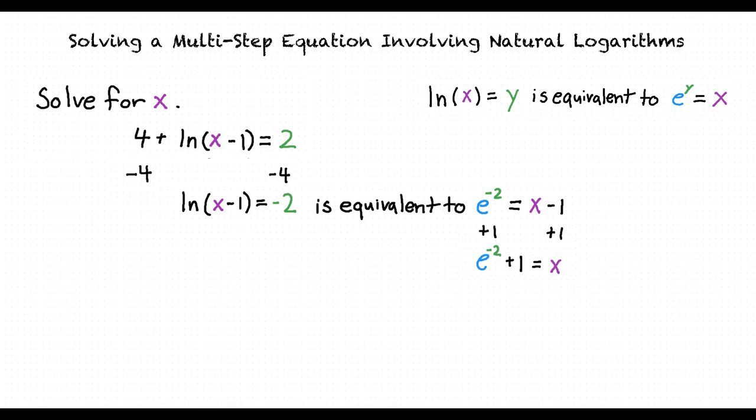Once we isolate x, we find that x is equal to e to the negative 2 plus 1. Using our calculator, we find that this is approximately equivalent to 1.14.